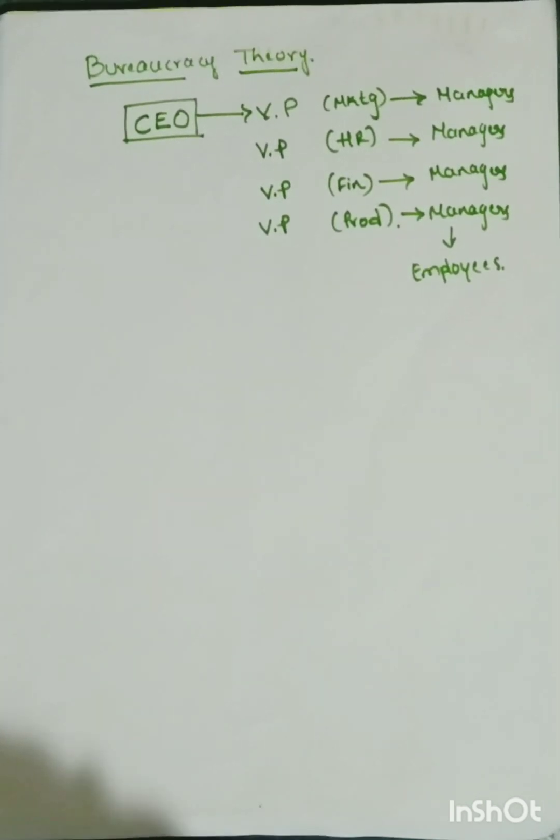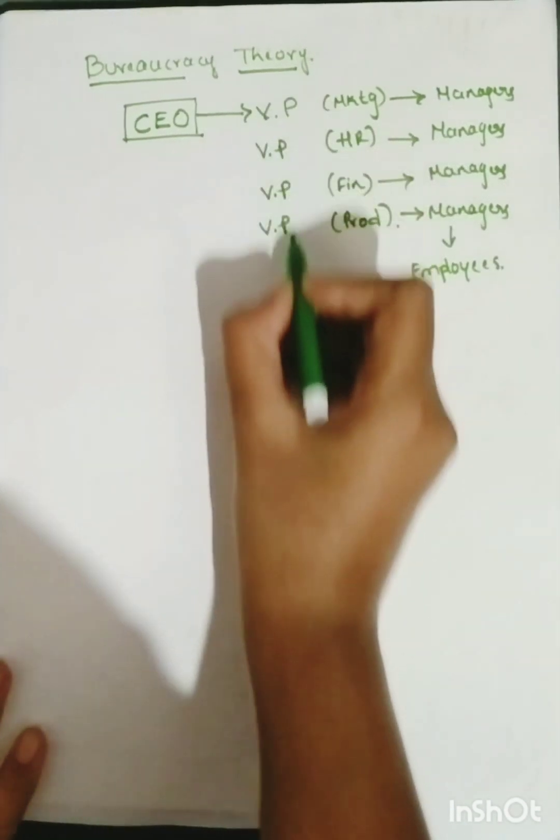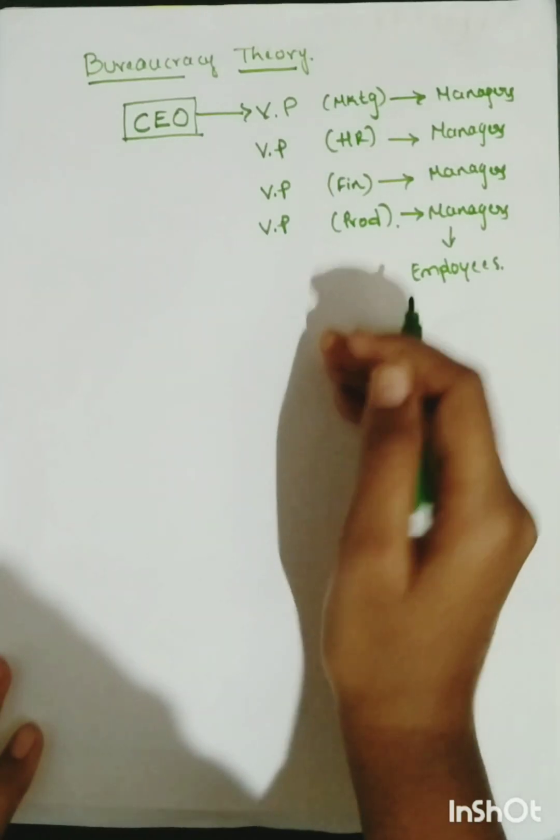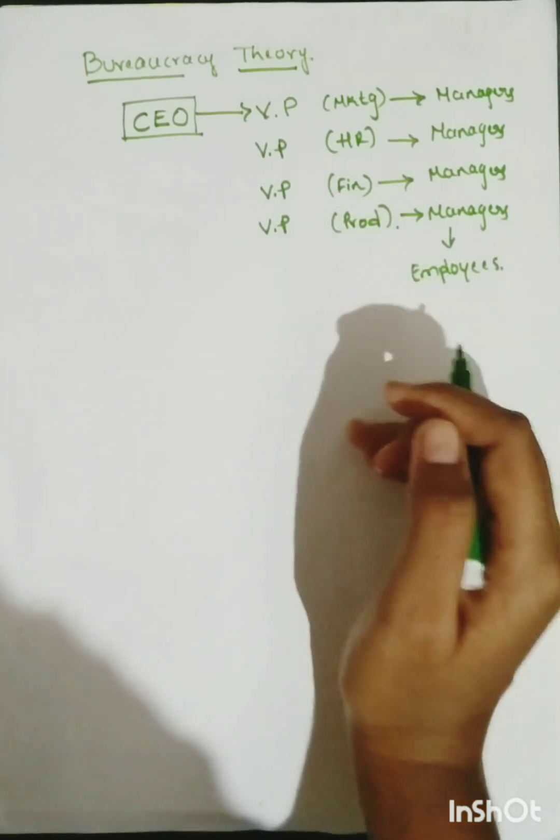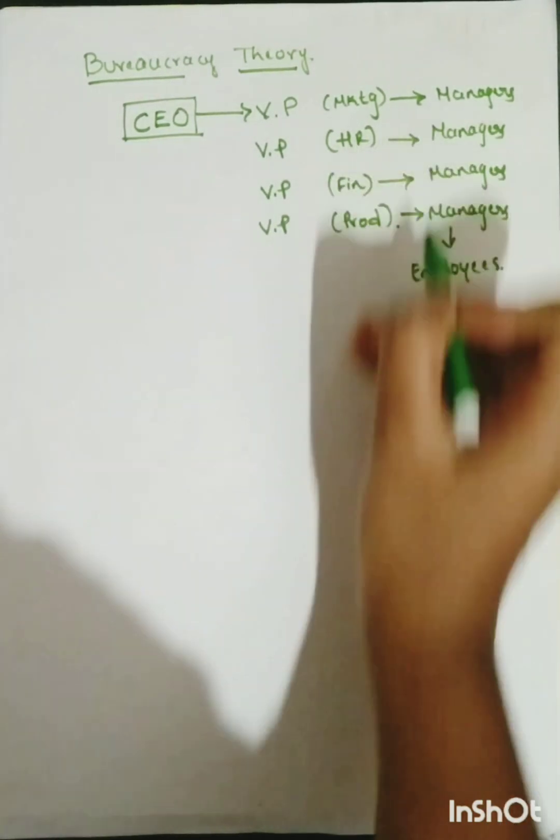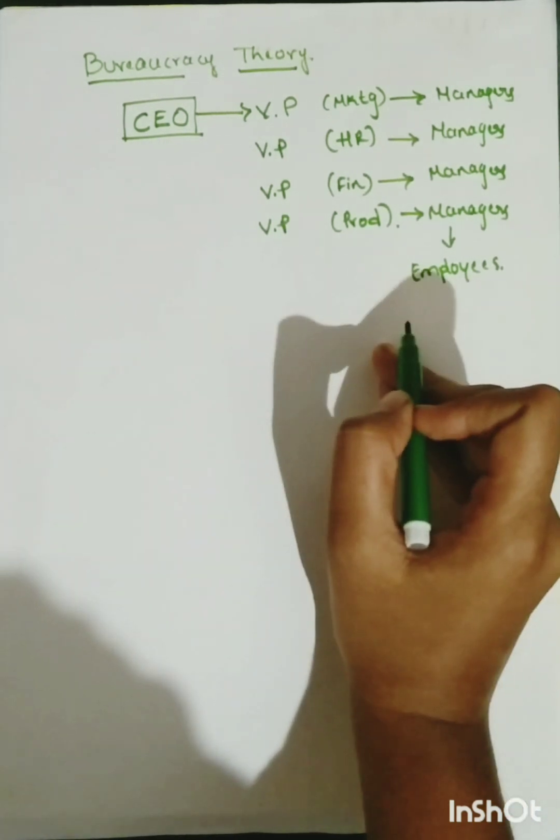Understand that there is a big organization in which we have a CEO in top level management, and under different functional divisions there is a vice president. Under several managers might be present depending upon the capacity of the teams, and under them a few employees will be working as a team so that they can achieve the organizational goals.